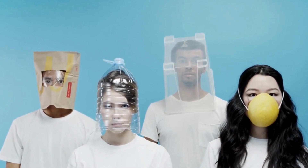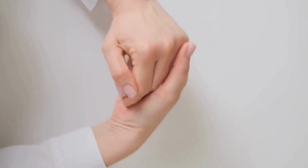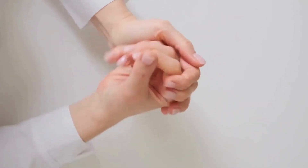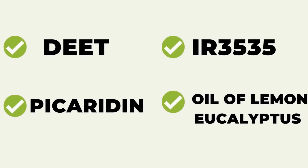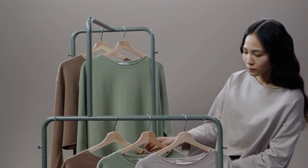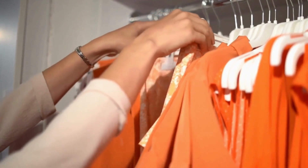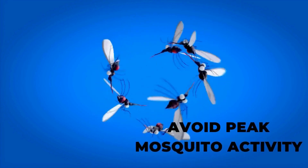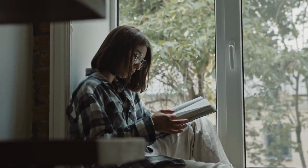To reduce your risk of mosquito bites, here are some effective ways to avoid them. Use mosquito repellent: apply an EPA-approved insect repellent on exposed skin, looking for repellents containing ingredients such as DEET, Picaridin, IR-3535, or oil of lemon eucalyptus. Wear protective clothing: cover exposed skin by wearing long-sleeved shirts, long pants, socks, and closed-toe shoes. Light-colored and loose-fitting clothing can help reduce mosquito attraction. Avoid peak mosquito activity: mosquitoes are most active during dawn and dusk, so if possible, limit outdoor activities during these times.